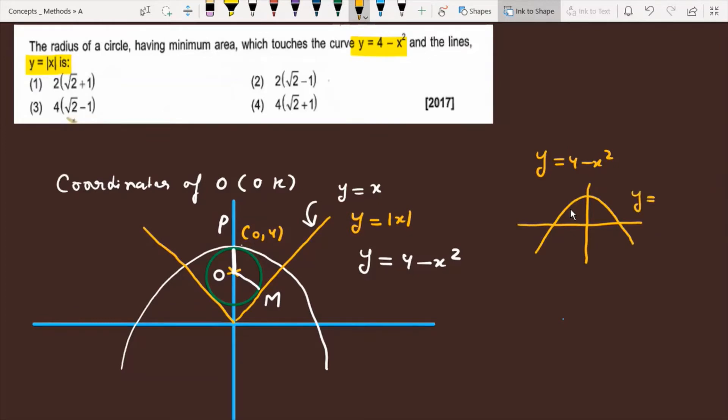The second curve provided in the question is y equals mod x. So if y equals mod x, you know that you have to plot this graph. So this is the graph of y equals mod x.